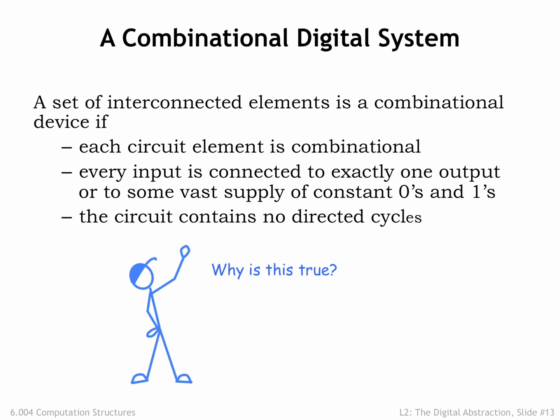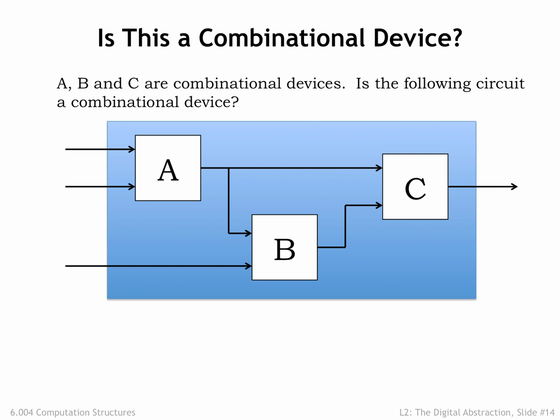Why is this true? To see why the claim is true, consider the following system built from the combinational devices A, B, and C. Let's see if we can show that the overall system, as indicated by the containing blue box, will itself be combinational. We'll do this by showing that the overall system does in fact obey the static discipline.